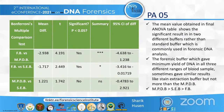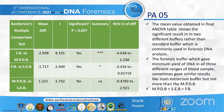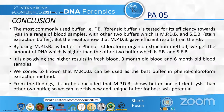Due to space constraints, not all data tables are included here, but the final error table from the Bonferroni multiple comparison test shows significant results for two different buffers compared to the standard buffer commonly used in forensic DNA analysis. The forensic buffer gave the minimum yield across all three ranges of blood samples and sometimes gave similar results to the SEB extraction buffer, but never more than the MPDB buffer. Thus, MPDB buffer yielded more DNA than the forensic buffer, while the comparison between MPDB and SEB buffer showed similar amounts of DNA.